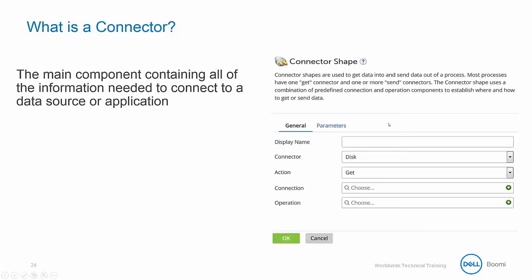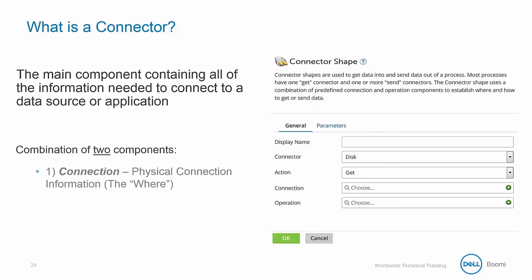A connector is the main component containing all of the information needed to connect to a data source or application. The connector is made up of two components. The first is the connection itself, which represents the physical connection information — essentially the 'where.'